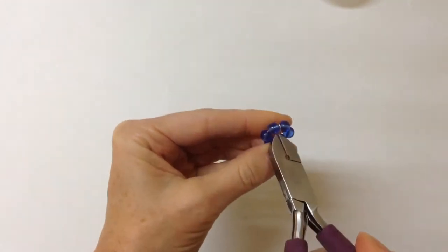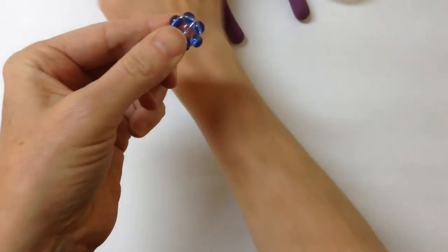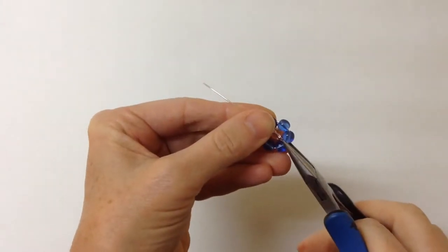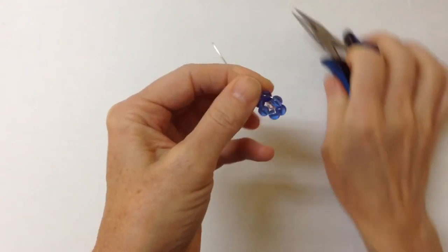And all you have to do is just clip it, but leave a little bit that can be pushed in. And then take your pliers, your flat pliers, and just push that little end in like that so it's not going to catch on anything.